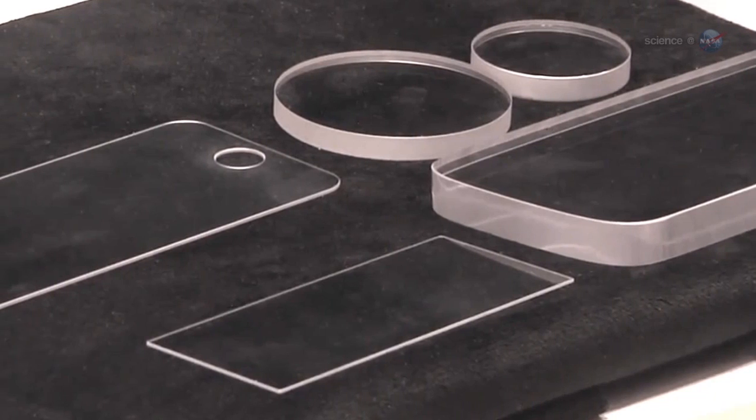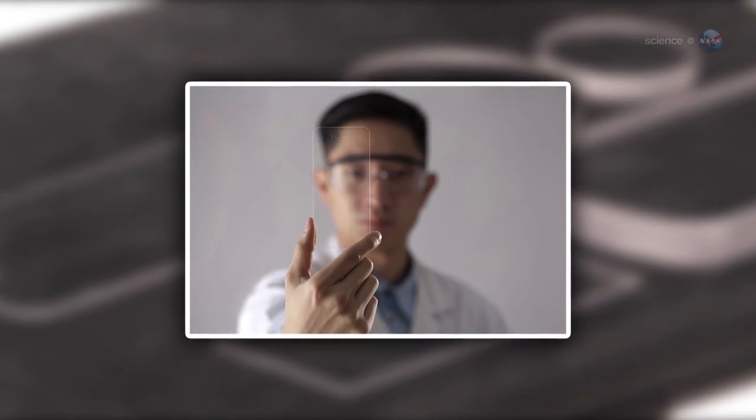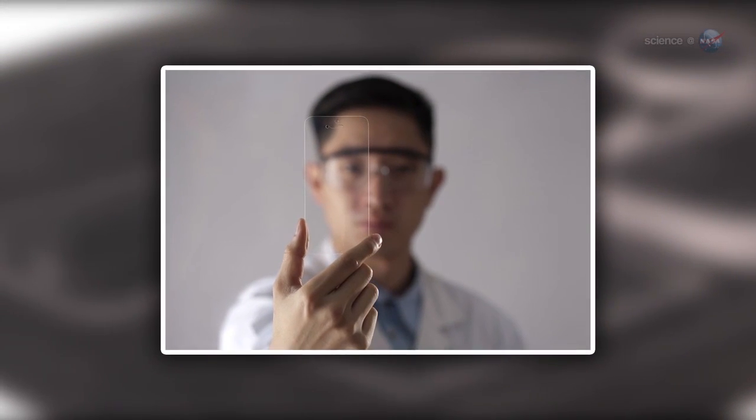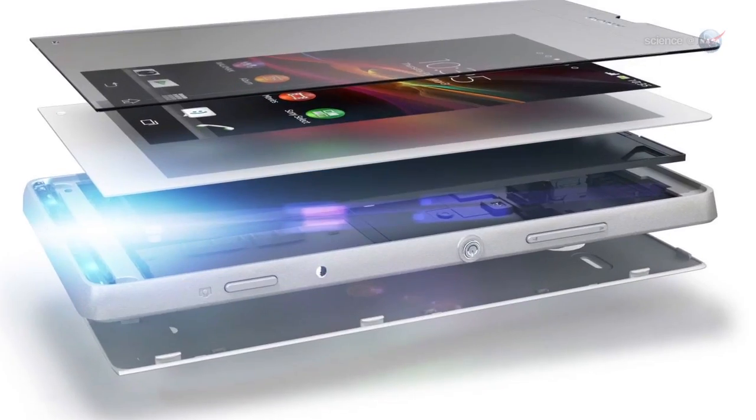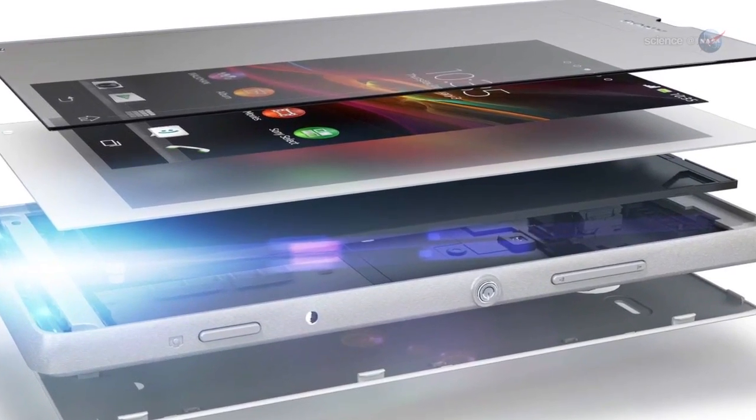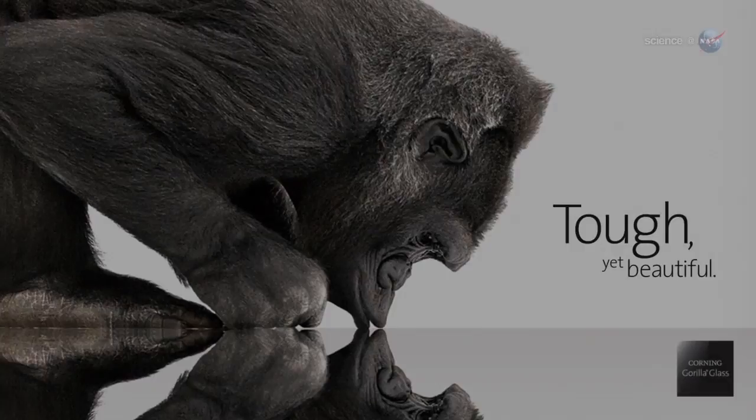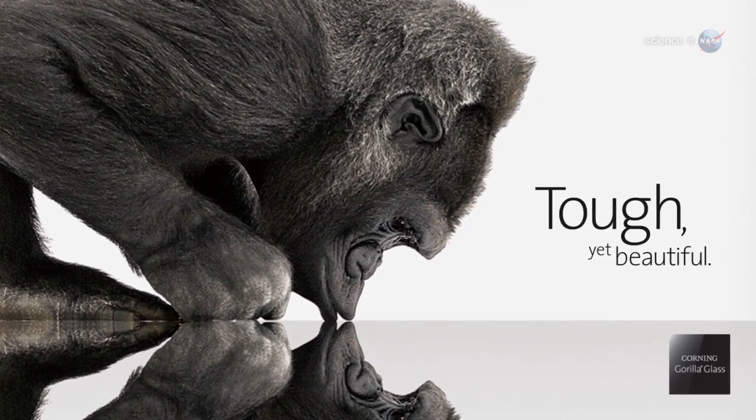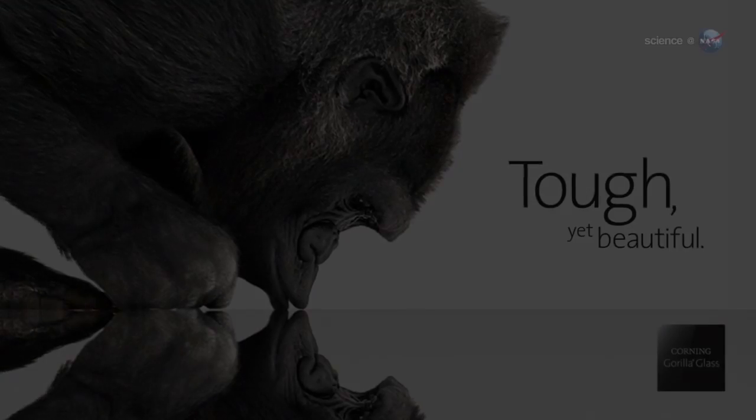Smart materials don't occur naturally. Instead, they are designed by engineers working at the molecular level to produce substances made to order for futuristic applications. The Corning Gorilla Glass that overlays the displays of many smartphones is a great example.